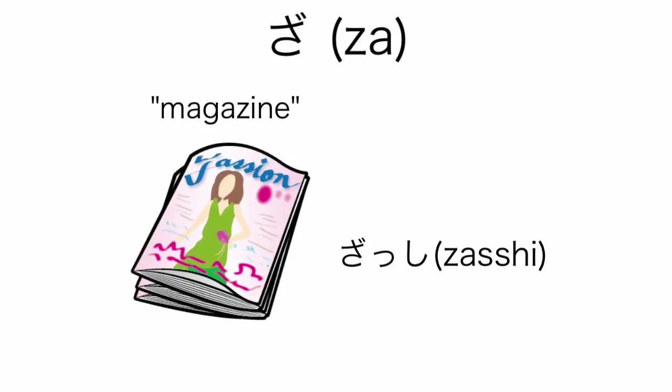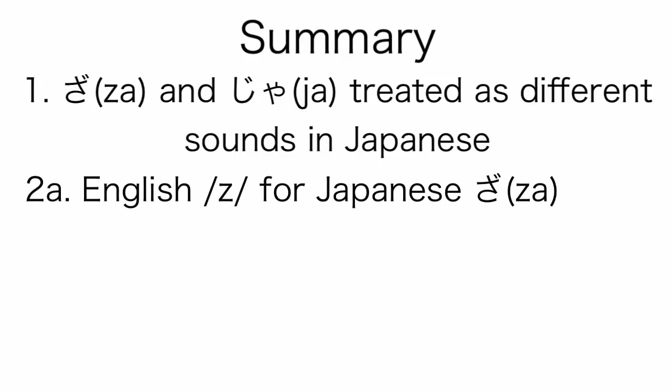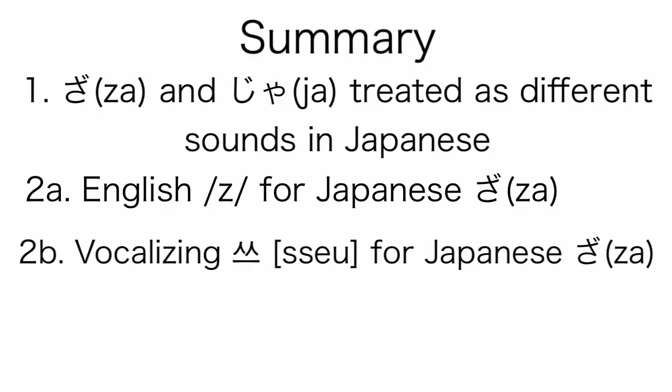Say 'zashi'. In this video, we have learned that the S and Z sounds are different sounds in Japanese. In order to pronounce the Japanese Z sound, we went over two possible methods. One is using the English Z sound for Japanese Z.